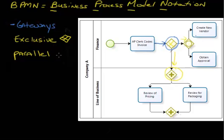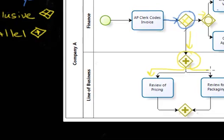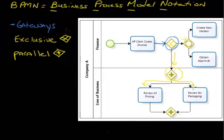A parallel gateway is represented by a diamond with a plus sign. What that simply means is that all the paths, regardless of condition, are going to be taken. So when we reach this gateway, the outflow is going to take all of the paths.